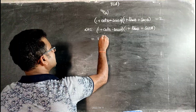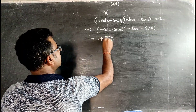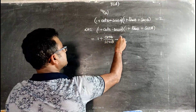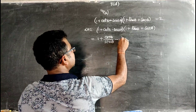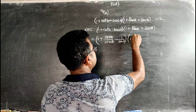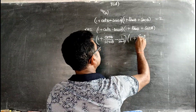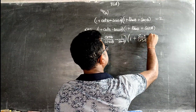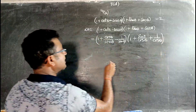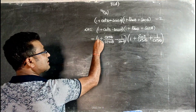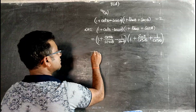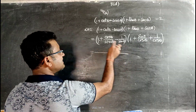It becomes: 1 + cosθ/sinθ - 1/sinθ for the first bracket, and 1 + sinθ/cosθ + 1/cosθ for the second bracket. We take LCM for each bracket; LCM of sinθ and 1 is sinθ.